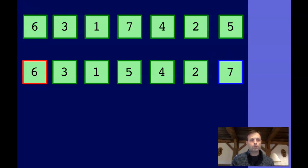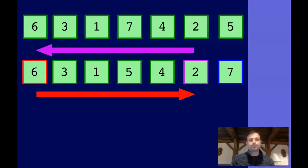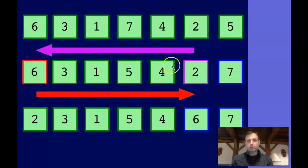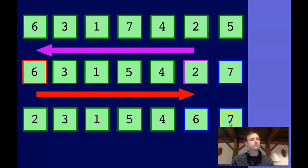The second time through the loop, the six is the max — it gets swapped to the end, which is now the two, not the seven. The two moves to the front of the list, which isn't the right place for it, but that doesn't matter. The selection sort is only worried about swapping the max to that end position. The idea is that after each iteration, we've put in the correct place the next highest value — the highest value first, then the next highest, then the next highest, and so on.